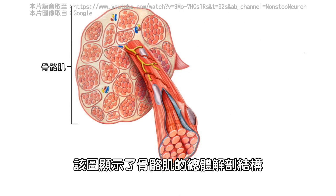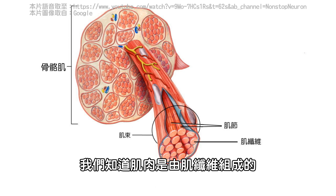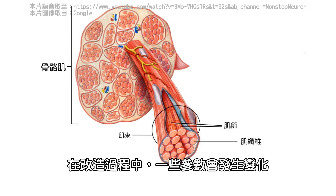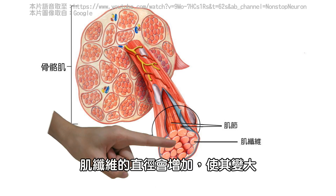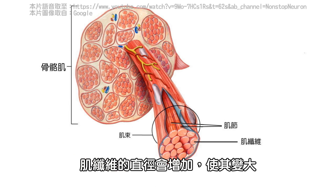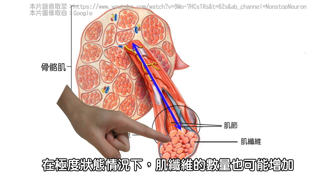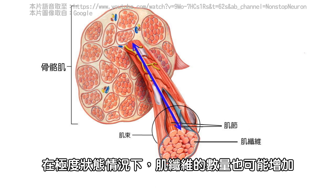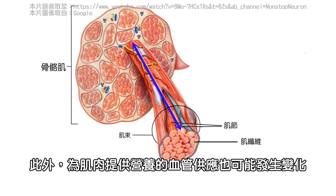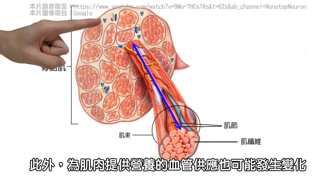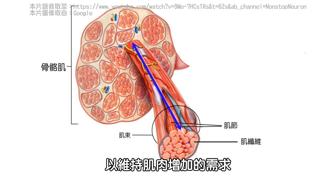This diagram shows the gross anatomy of a skeletal muscle. We know that muscles are made up of muscle fibers. During remodeling, several of its parameters may change. The diameter of the muscle fibers can increase, making them larger. The length of the muscle can also be adjusted to maintain proper muscle contraction. Even the number of muscle fibers may also increase in extreme cases. Additionally, the vascular supply, which provides nutrients to the muscle, may also undergo changes to support the increased demands.